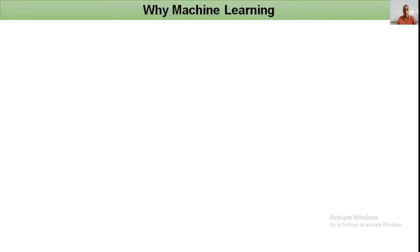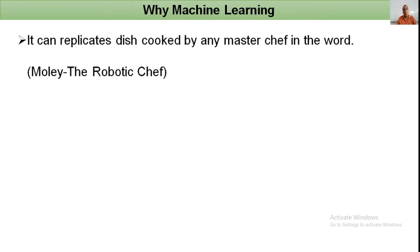Machine learning can replicate dishes cooked by any master chef in the world. Moley is the first robotic system where the robot learns all the techniques of a master chef — how they cook — and can make the same dish for you. Moley has artificial hands that work the same as human hands.